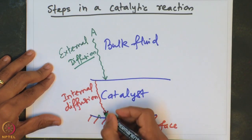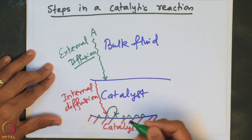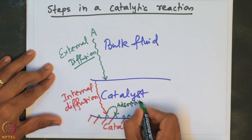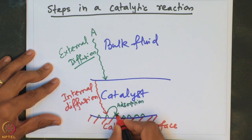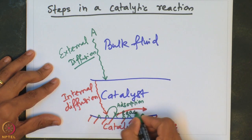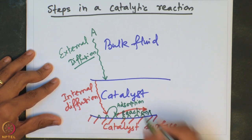Then there has to be adsorption of the species onto the surface — that is the adsorption step. Following which, the species which is adsorbed actually has to undergo a reaction — that is the reaction step. And we assume that because of this reaction, a certain product is formed at this location.